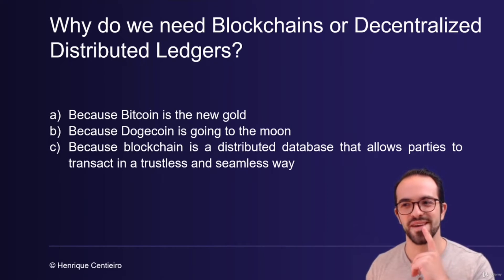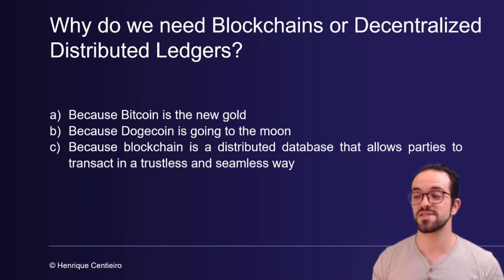This one is hard to reply, right? It's because Dogecoin is going to the moon. No, I was kidding. It's because blockchain is a distributed database that is allowing us to transact in a trustless way and seamless way. And this is what blockchain is also bringing to the digital art world and to NFTs.